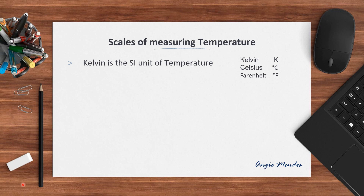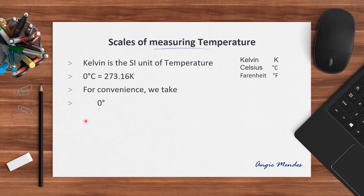The relationship between the Celsius and the Kelvin scale can be stated as follows. Zero degrees Celsius equals to 273.16 Kelvin, but for convenience sake we will write zero degrees Celsius equals to 273 Kelvin.